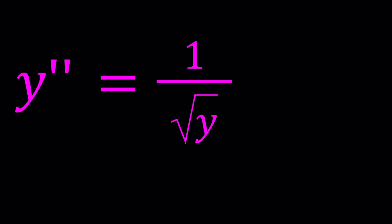So we have a differential equation, the second derivative of y, which is y double prime, equals 1 over the square root of y. y is a function of x, and we're going to try to solve for y, which is finding an expression for y in terms of x.